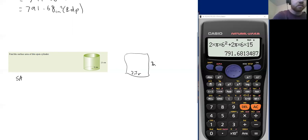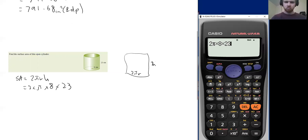So the surface area is going to be 2πrh, which we can then substitute our values, which equals 2π times 8 times 23. Don't forget to write that out first before you put it in your calculator. 2π times 8 times 23 equals...